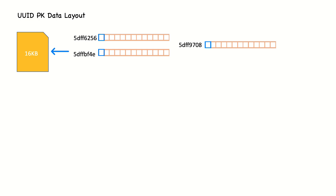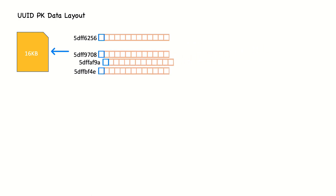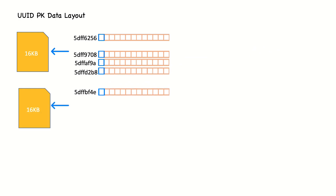Contrast that with what happens when we insert data into the UUID clustered index table. Because each new record doesn't necessarily have a larger primary key value than the previous one, InnoDB cannot always place the new row at the end of the index. It has to find the appropriate place for the row — on average somewhere near the middle of the existing data — and make room for it. This causes a lot of extra work and results in a sub-optimal data layout.